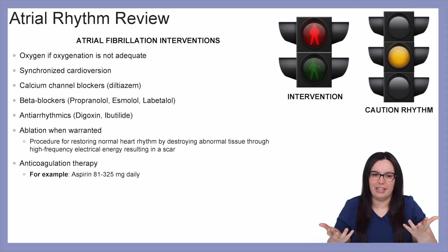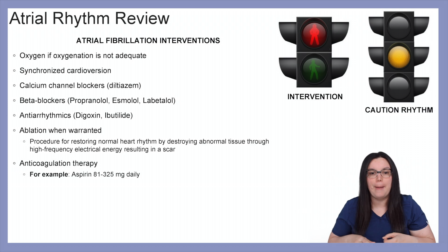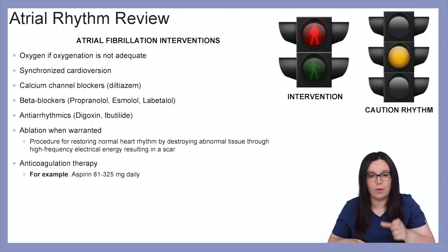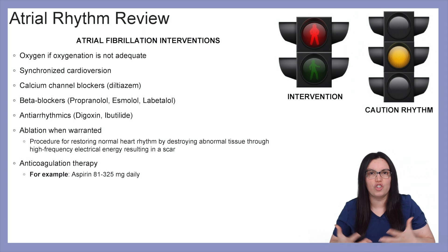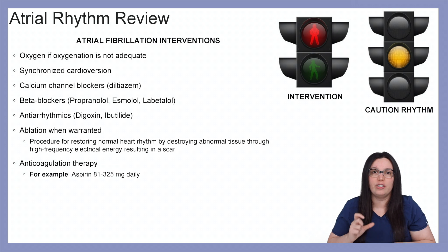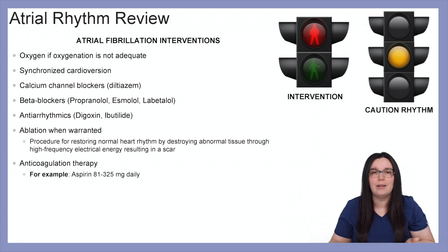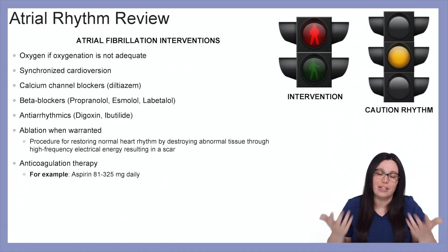Interventions for atrial fibrillation include providing oxygen if oxygenation is less than 94%, synchronized cardioversion, calcium channel blockers such as diltiazem, and beta blockers. Antiarrhythmics can help convert it, and if those don't work, we can look at ablation — a procedure where we restore normal heart rhythm by destroying abnormal tissue through high-frequency electrical energy, resulting in scarring within the atria. We also want to consider anticoagulation therapy such as aspirin 81 to 325 milligrams daily if this is a sustained rhythm, because one complication of atrial fibrillation is stroke: blood sits in the fibrillating atria, begins to clot, and if that clot breaks off it can travel to the brain and cause an obstruction.